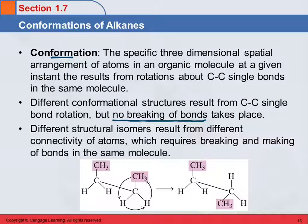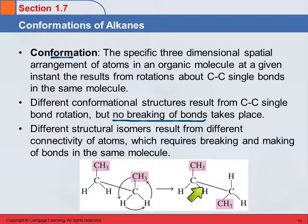How they're drawn can be a little deceiving, because these two pictures don't look exactly the same. But in order to make this one into that one, do we have to break any bonds? No, we just have to twist one, and single bonds do twist. If they were constitutional isomers, in order to go from one to the other, we would actually have to break a bond and connect it differently.